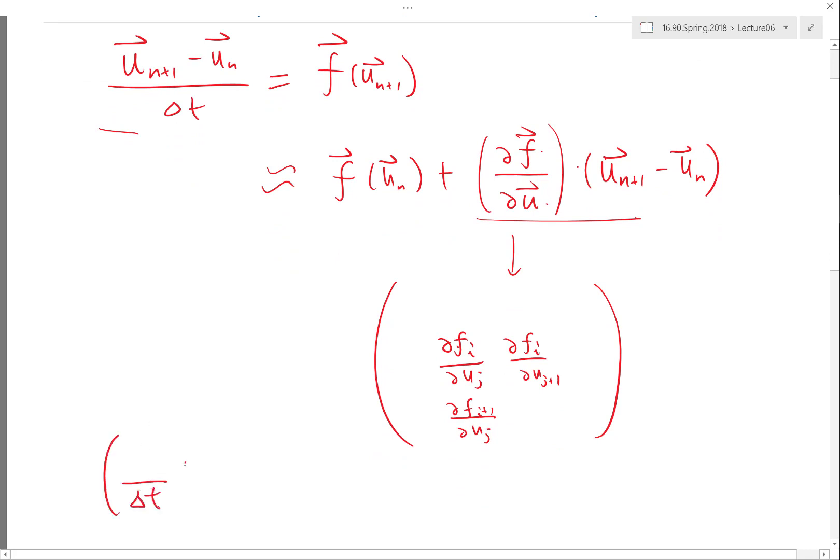You have, instead of 1 over delta t, you have identity over delta t times this. And here you have to minus the matrix. This is equal to f of u_n... So let me write this plus u_n divided by delta t, and plus this times u_n.